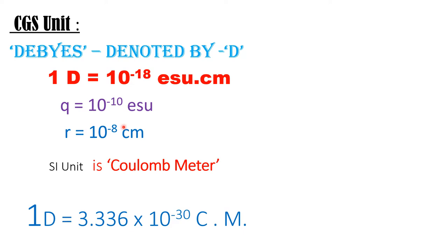By substituting the values of q and distance r, we get that one Debye equals 10⁻¹⁸ esu·cm. The SI unit of Debye is Coulomb·meter, and one Debye equals 3.336 × 10⁻³⁰ Coulomb·meter. One Debye = 3.336 × 10⁻³⁰ C·m (SI unit) or 10⁻¹⁸ esu·cm (CGS unit).